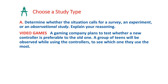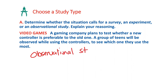Choose a specific study type: A gaming company plans to test whether a new controller is preferable to the old one. A group of teens will be observed while using the controllers to see which one they use the most. You might think it's an experiment, but we are just observing the group with the two controllers — we're not affecting anything. So this is an observational study, because teens are being observed without being affected.